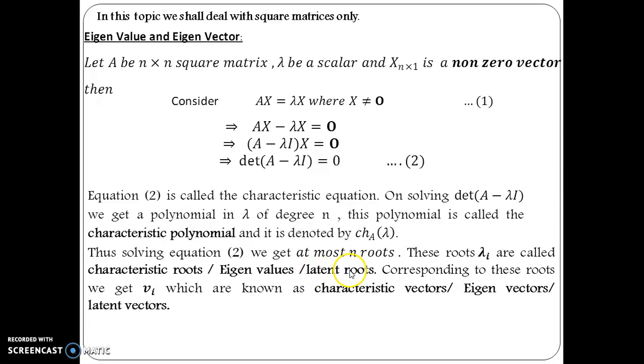So, these are the roots and why they are known as latent: because they are hidden in the matrix. We cannot see them visually but they are somehow hidden in the given matrix. That is why latent roots. And when we further solve using some other substitutions, we obtain for each λ_i, we obtain a vector v_i which is known as eigenvector or characteristic vector or latent vectors. So, this is the basic theory of eigenvalues and eigenvectors.